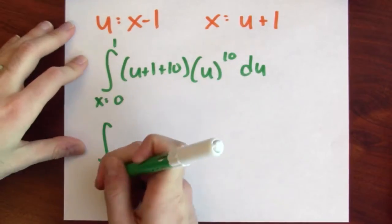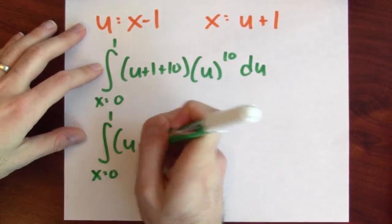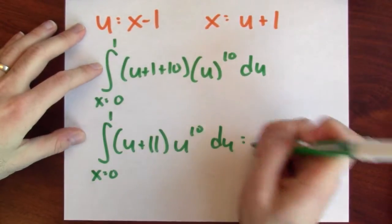In some textbooks, this technique of starting with a u substitution but then solving for x, this is sometimes called back substitution. Regardless of the name, let's proceed. So this is the integral x goes from 0 to 1 of u plus 11 times u to the 10th du.